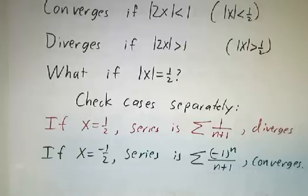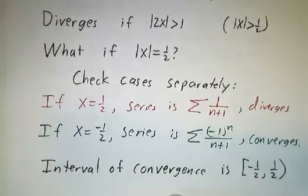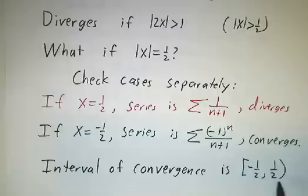So in this case, one of the endpoints converged, the other endpoint diverged, and the interval of convergence is from minus 1 half to 1 half, including minus 1 half, but not including 1 half.